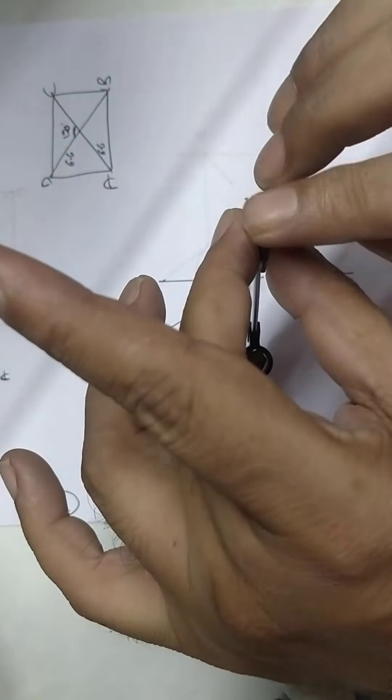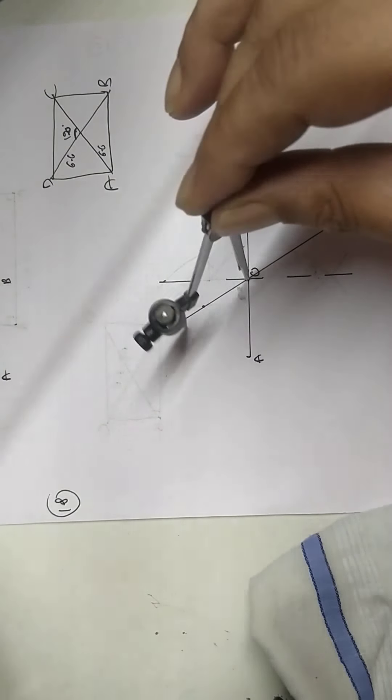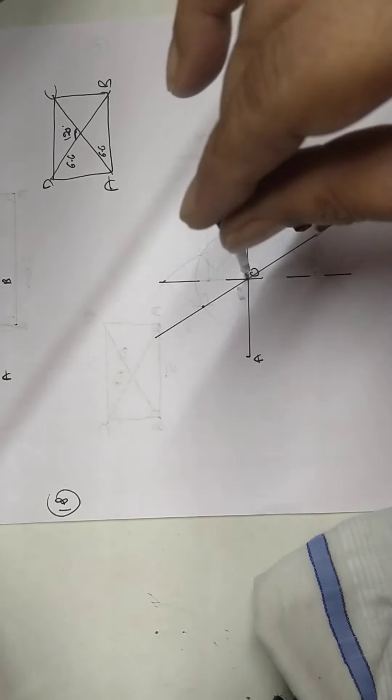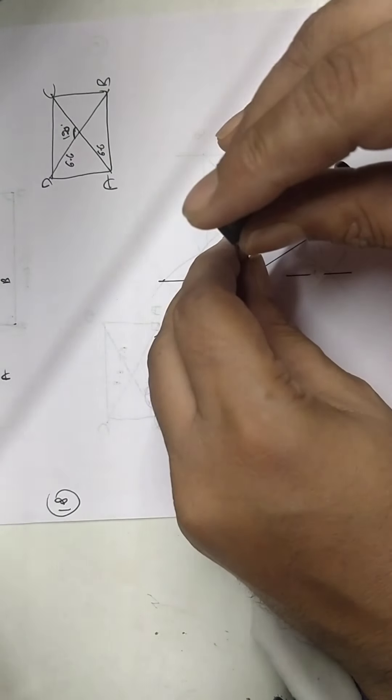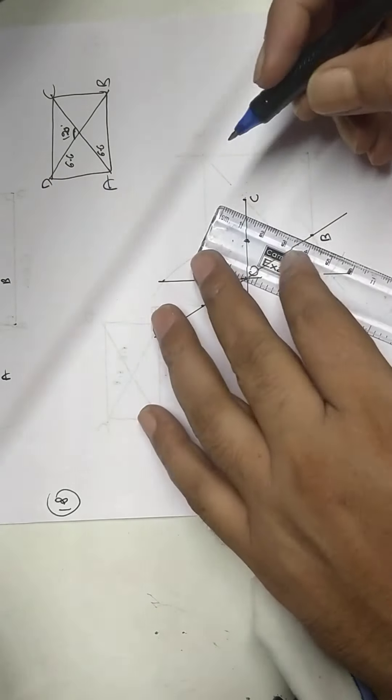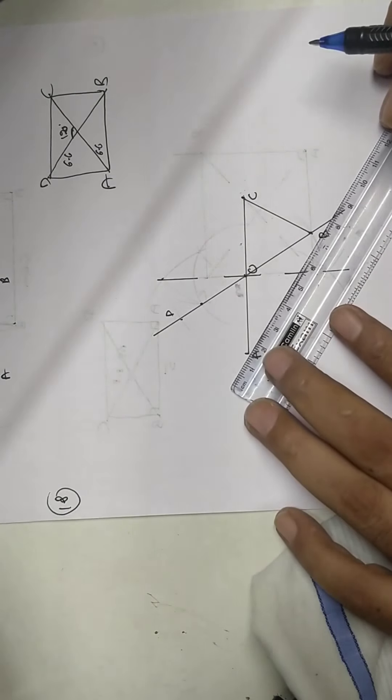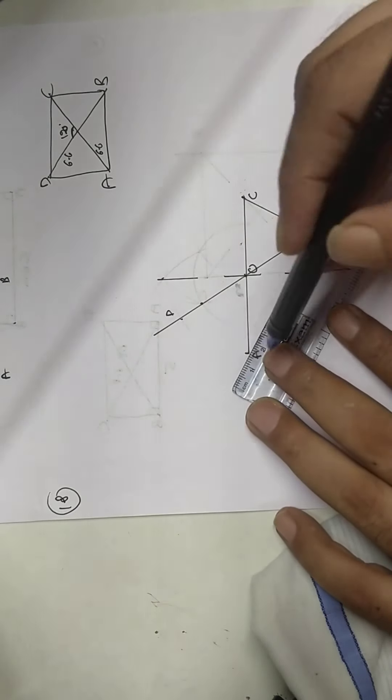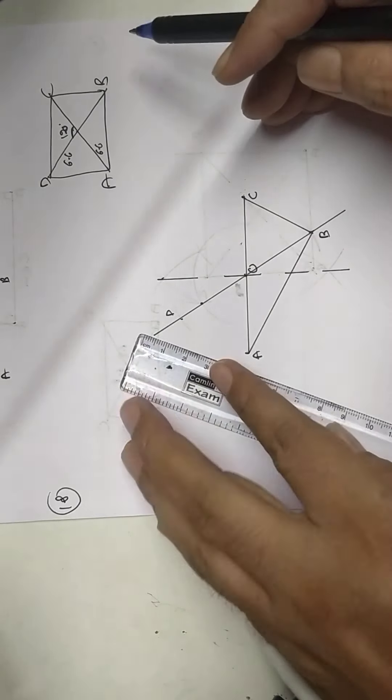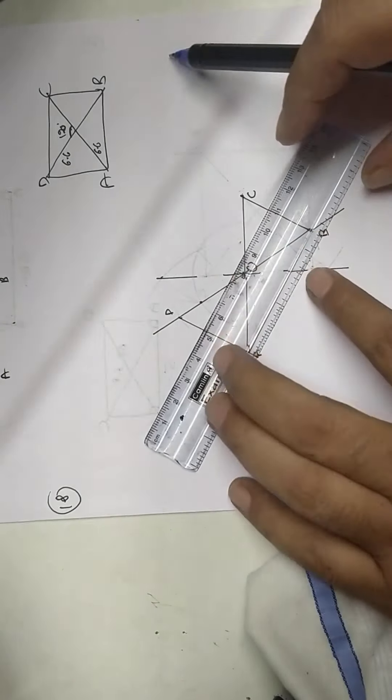So OA equals OC equals OB equals OD. So measure OA. Clear, as bisector OA. Cut on this line and here. This is my B. This is my D. Join them. You get required rectangle whose diagonals we know and angle between diagonals we know.